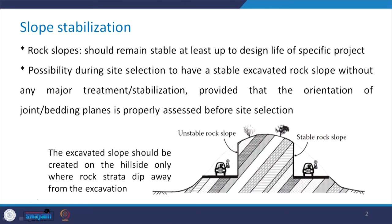Take a look at this picture — it beautifully defines this particular condition. You can see that this is a slope in which the planes are dipping in this direction, and two cases have been shown. In one case the slope has been cut in this particular manner, and in another case it has been cut on the other side. This one is said to be the stable rock slope, while the other side is the unstable rock slope.